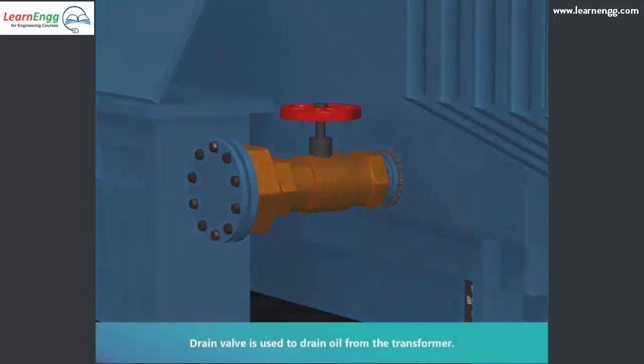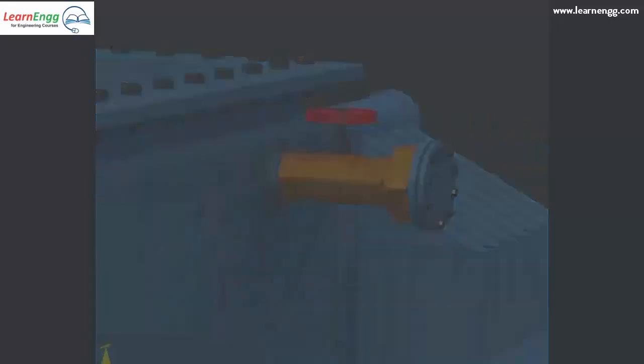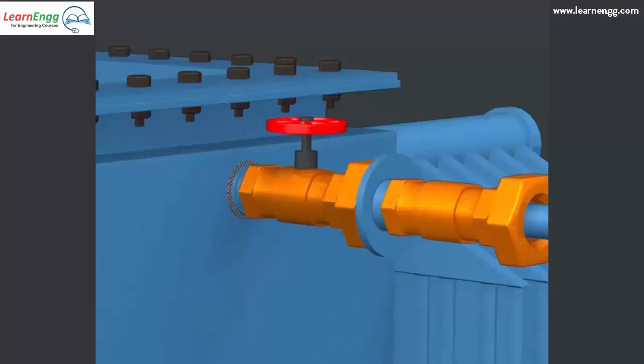Drain bulb is used to drain oil from the transformer. Oil is used for cooling purpose.